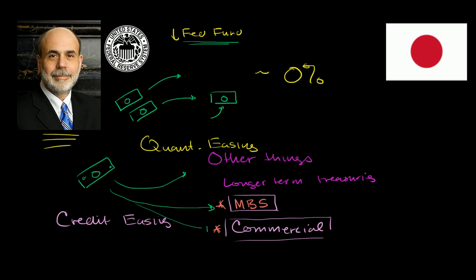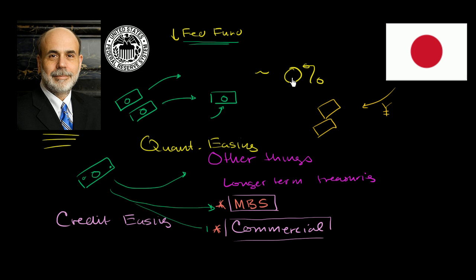When Japan faced its own banking and debt crisis in the 1990s, the first thing it did was lower its target interest rate — the rate that banks borrow reserves from each other. The way to do that is to print money. The central bank prints yen and buys short-term government securities. The byproduct is that it increases the amount of currency or reserves in circulation. All banks have more reserves, so the demand for those reserves goes down, lowering the cost of borrowing and the interest rate. Japan did this enough that it reached a 0% interest rate.